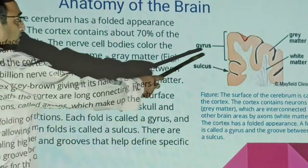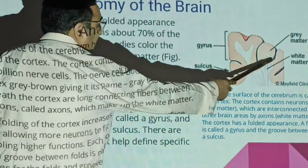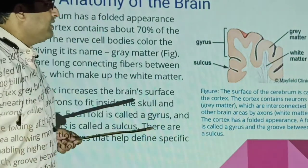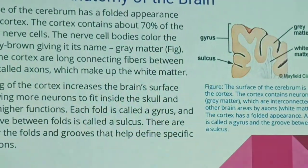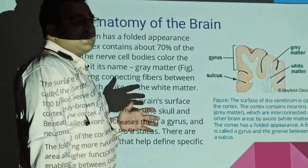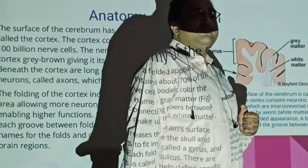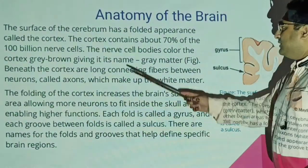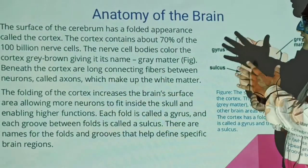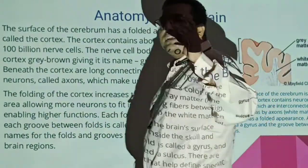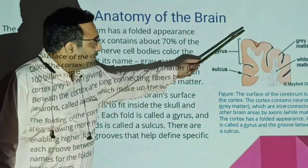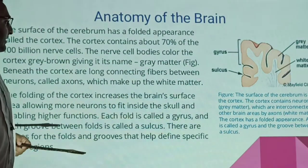The cerebrum surface is called the cortex. The cortex is gray on the outside and white on the inside. The cortex contains about 70% of the brain's nerve cells. The nerve cell body color makes the cortex gray — this is called gray matter.